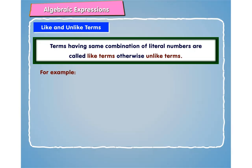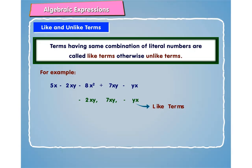For example, in the expression 5x minus 2xy minus 8x squared plus 7xy minus yx minus 2xy, 7xy and minus yx are like terms.